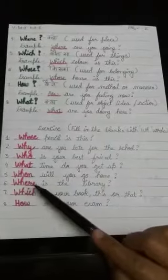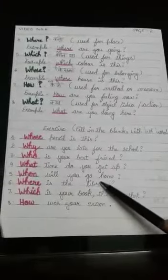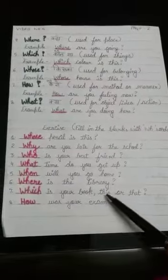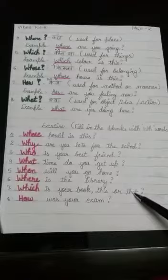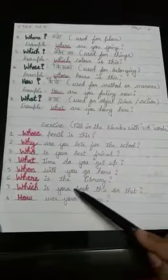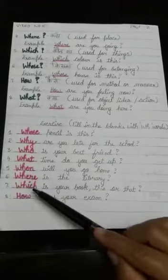Next is blank will you go home? Blank is the library? Here place is being asked so I will write where. Blank is your book, this or that? Now you are confirming, it is used for a thing. This is a thing, book is a thing, so here I have written which. Blank was your exam? Here I am asking method or manner, so that is why I have written here how.